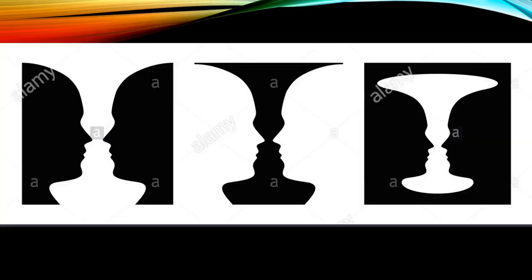Before answering that question, I want you to partake in this activity. You can see three images — label them image number one on your far left, image number two in the middle, and image number three to your right. Take a pen and paper and write down what you can see.